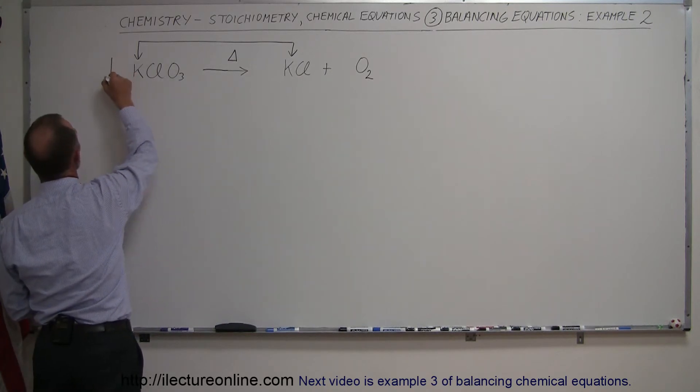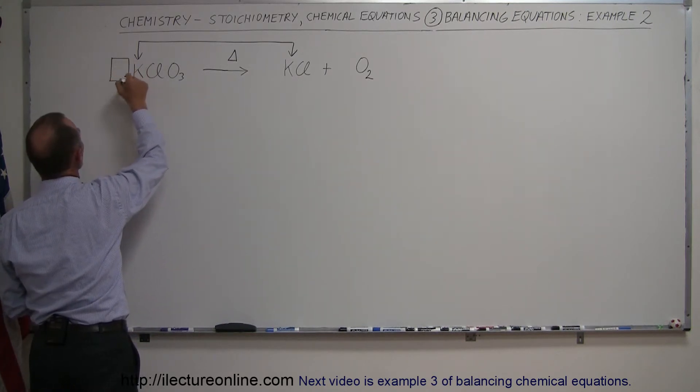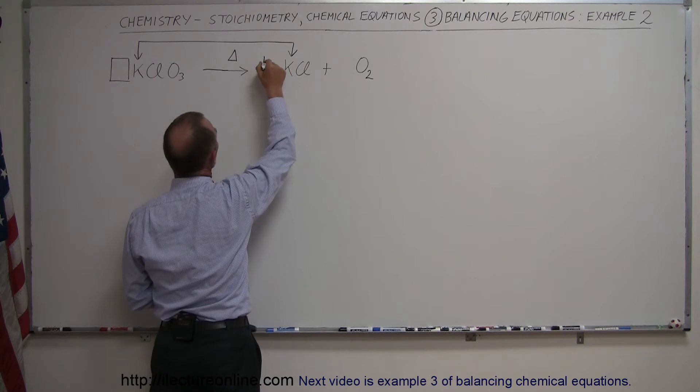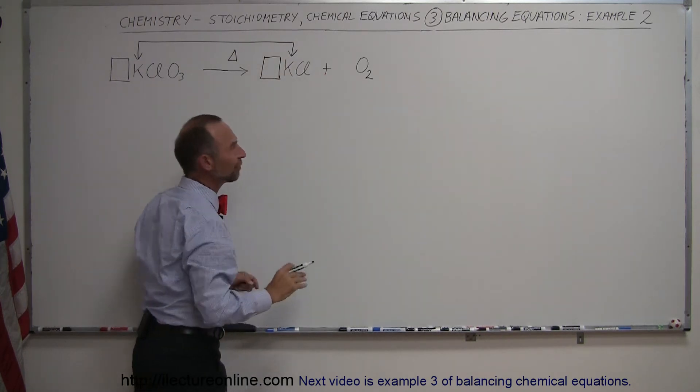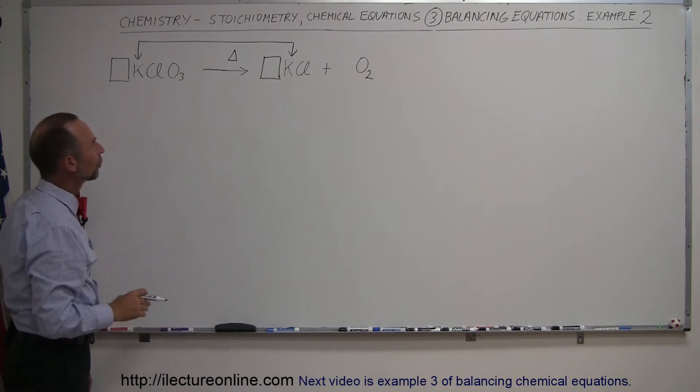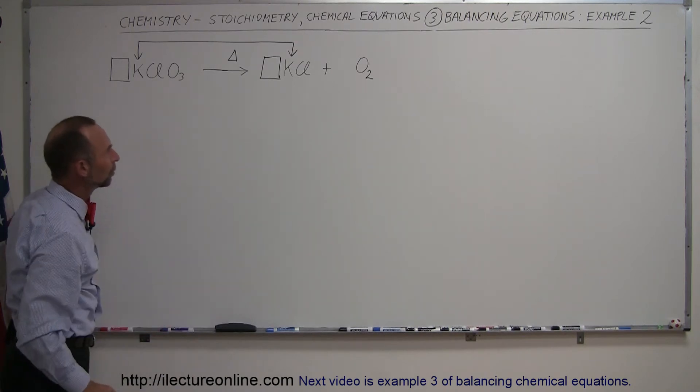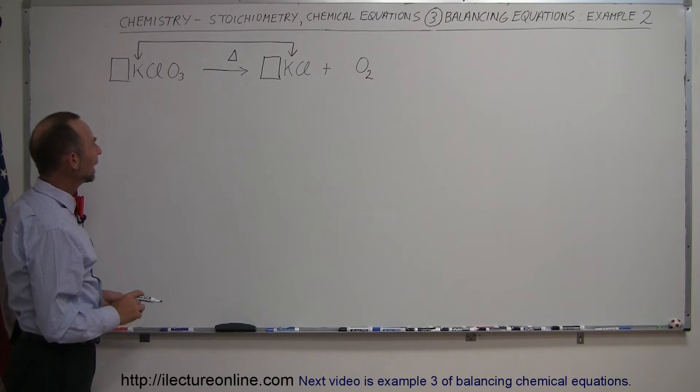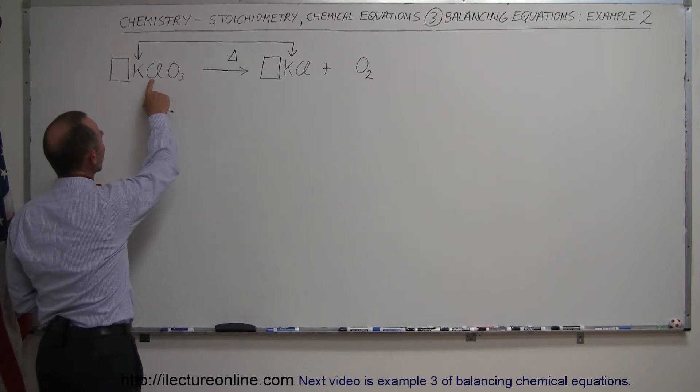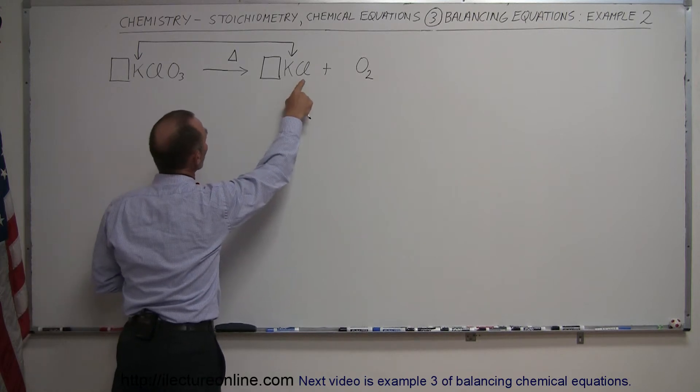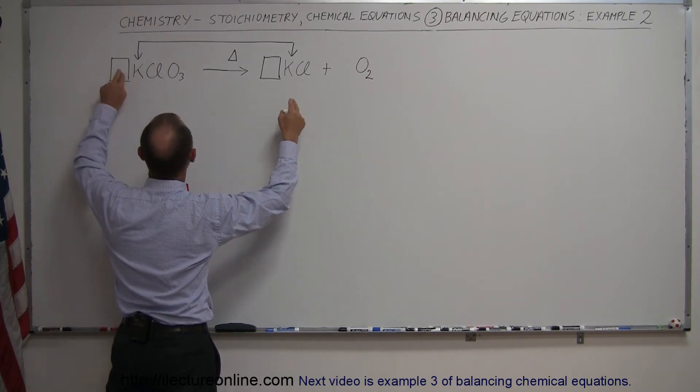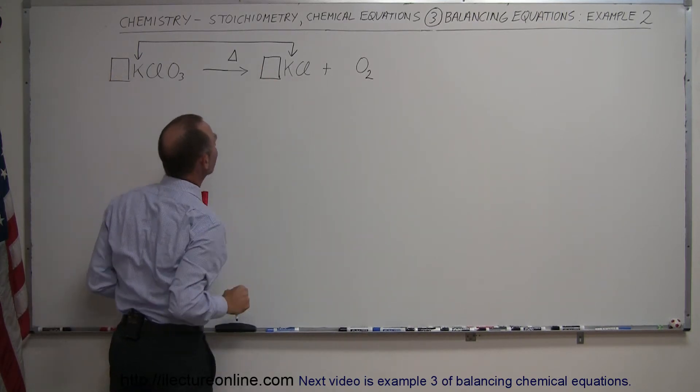So to indicate that, we may want to put a little box in front. This indicates that this box will have to have the same number as this box. Notice that I left room in front of each molecule so that I would have room to put the numbers in as needed. Next I look at chlorine, the chlorine atom. There's one in this molecule and there's one in this molecule, which again means that whatever number I put in there, I must have the same number in there.